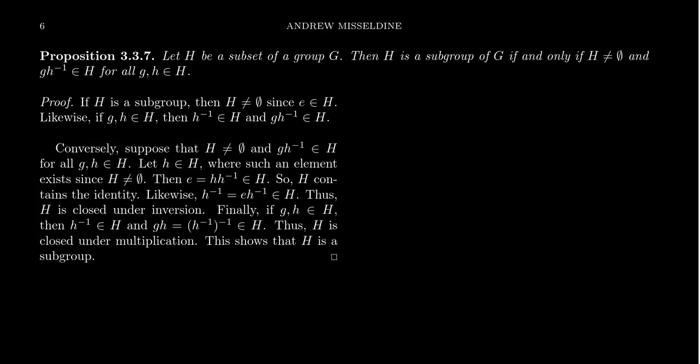Previously, we've learned that in order to show that a subset of a group is itself a group, that is a subgroup, it suffices to show that the subset is closed under multiplication, that it contains the identity, and that it contains all of the inverses for elements in the set.